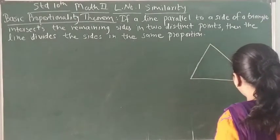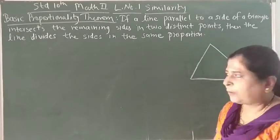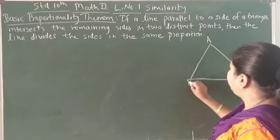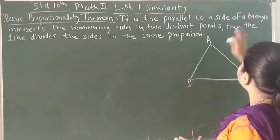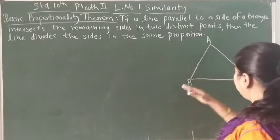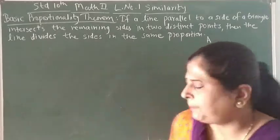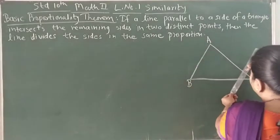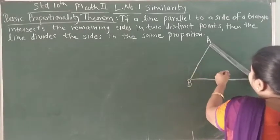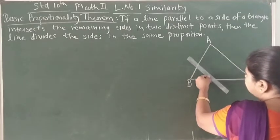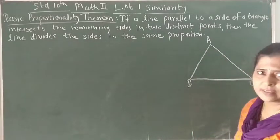We can draw a triangle. A triangle need not be acute; any type of triangle we can draw. Let's give it the name ABC. So ABC is the triangle, and one line is parallel to a side of the triangle. Now we have three sides: AB, BC, and AC. We can draw a line parallel to side AB, or parallel to BC, or parallel to AC. But where it intersects — what more is given? It intersects the remaining sides in two distinct points.